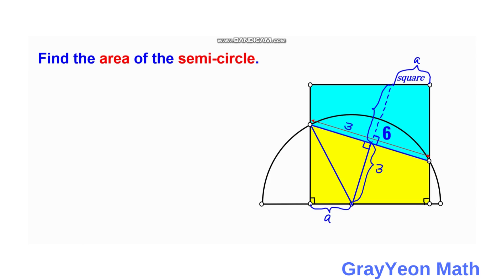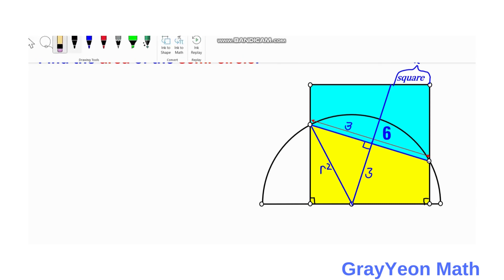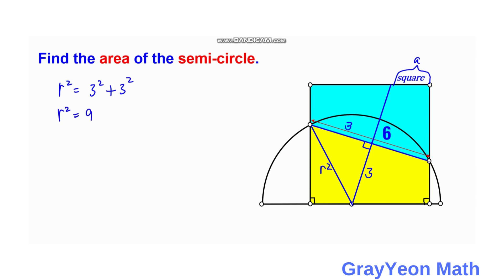And since this is 90 degrees, we can find this R square. So looking for R square, since we have this isosceles right triangle, R square is equal to 3 square plus 3 square. So R square is equal to 9 plus 9, so R square is equal to 18.